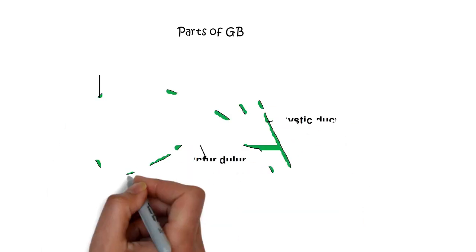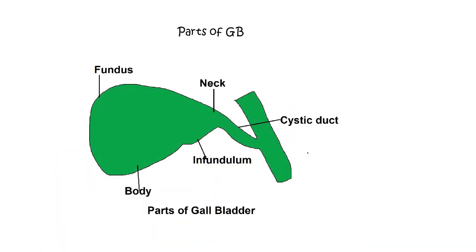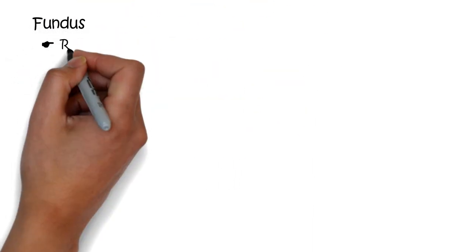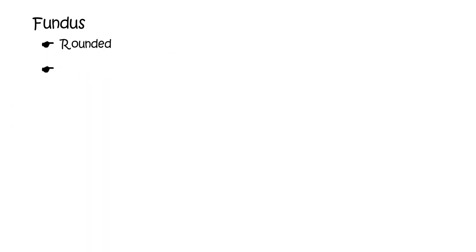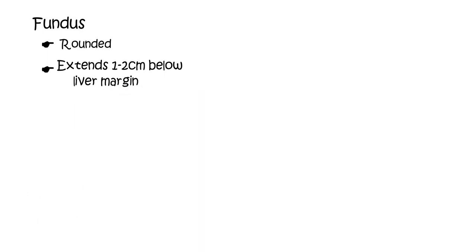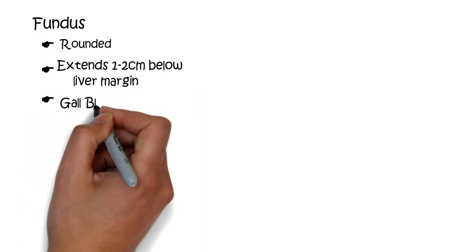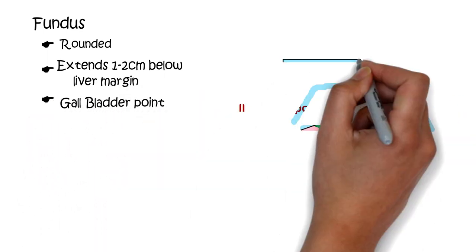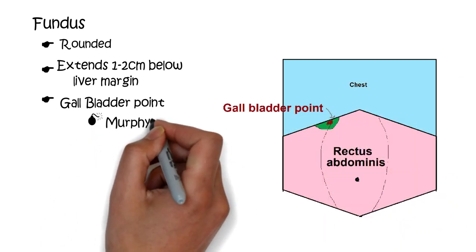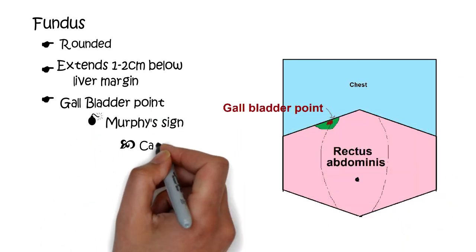There are four parts of the gallbladder: the fundus, body or corpus, infundibulum, and the neck. The fundus is rounded and blind, and normally extends 1–2 cm below the liver margin, in the angle between the lateral border of the right rectus abdominis and the 9th costal cartilage — this is known as the gallbladder point. The Murphy sign is elicited when the gallbladder point is gently pressed, causing the patient to catch their breath.